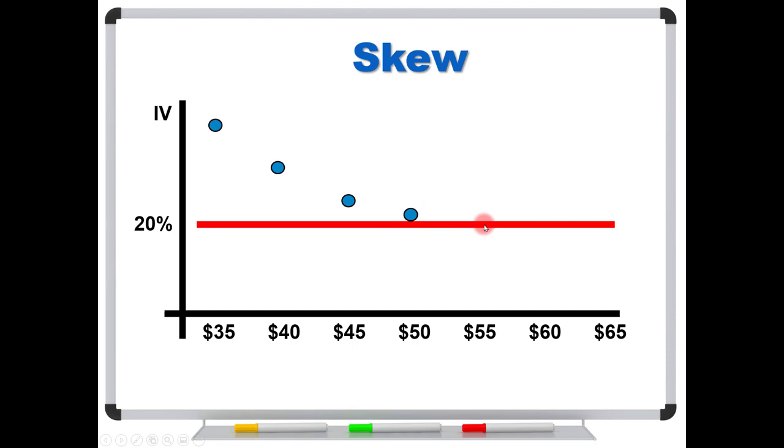So you'll usually see these line up right here. But then as we start going in this direction, let's say that these are out of the money calls, we'll start to see the skew pick up again. We'll see these volatilities start to change. So in this case, this is called a volatility smile. And we can get different degrees of them.